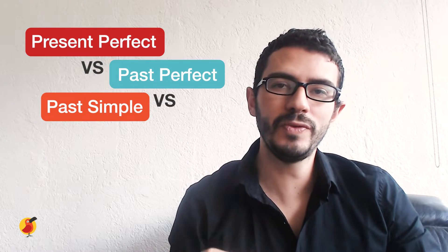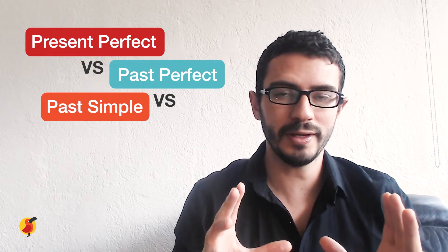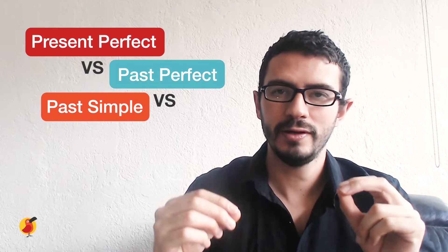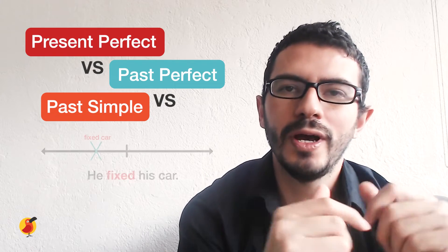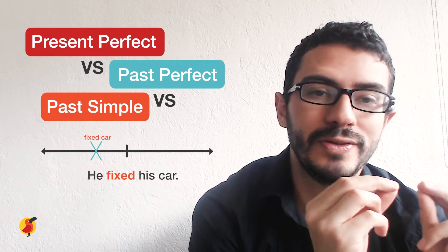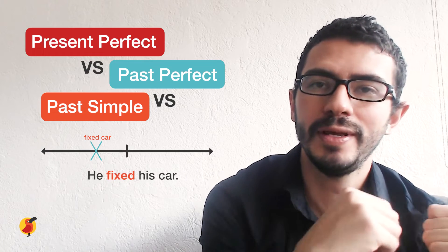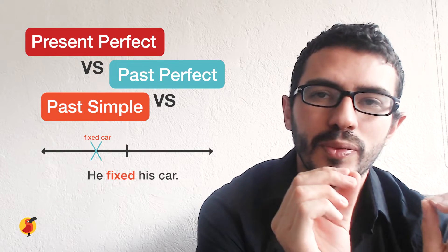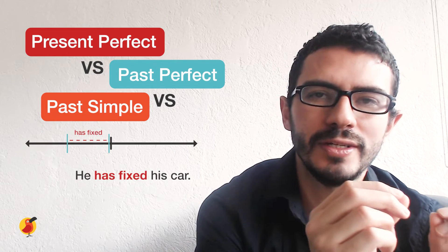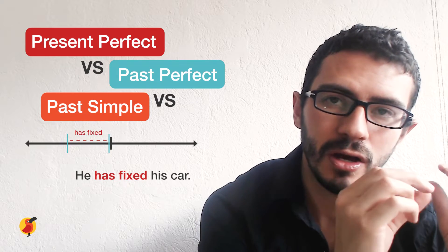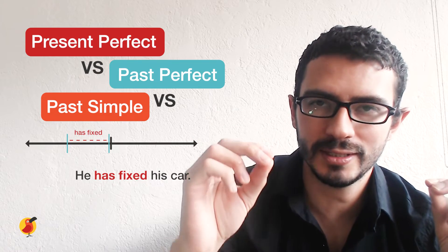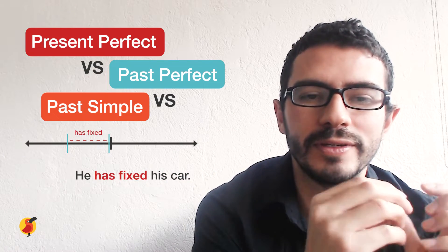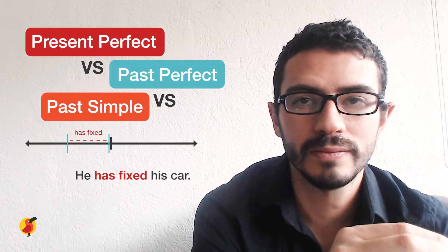So now we're going to do a review with a timeline that is going to explain simple past versus present perfect versus past perfect. So here we have the timeline. Let's go with a simple past first. Something that happened in the past. He fixed his car. Then you have the present perfect, which is something that is affecting in the past all the way to the present. This statement would be true till now. For example, he has fixed his car.